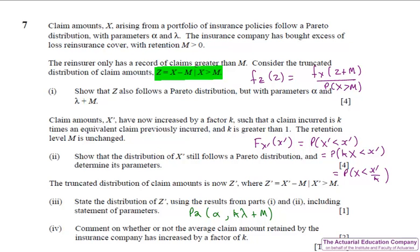The final part of the question asks us to comment on whether the average claim amount has increased by a factor of K if the retention limit is unchanged. Well this is identical to April 2016 question 8 part 3. Essentially claims increase but not by a factor of K because a greater proportion of claims have been referred to the reinsurer.